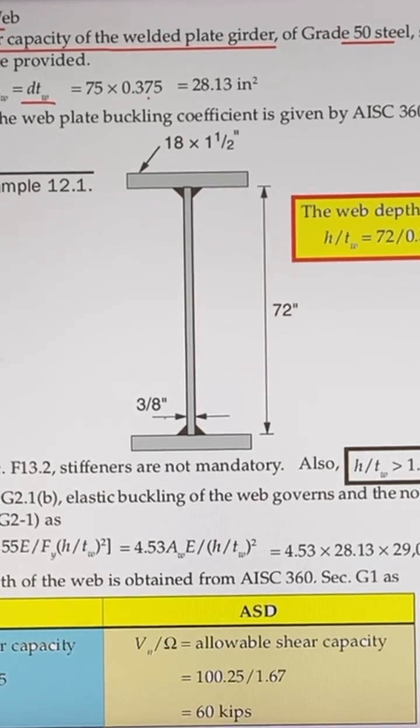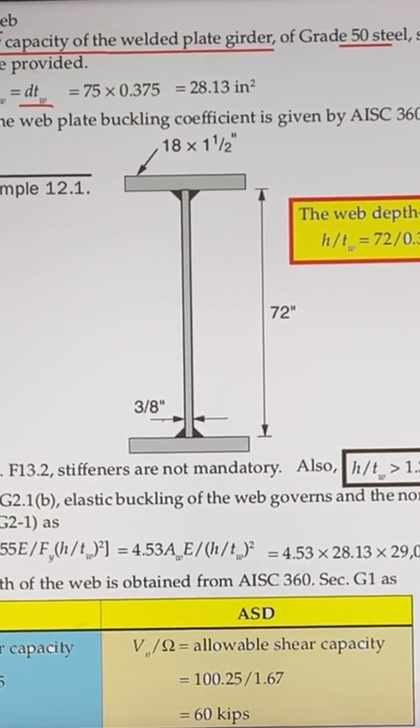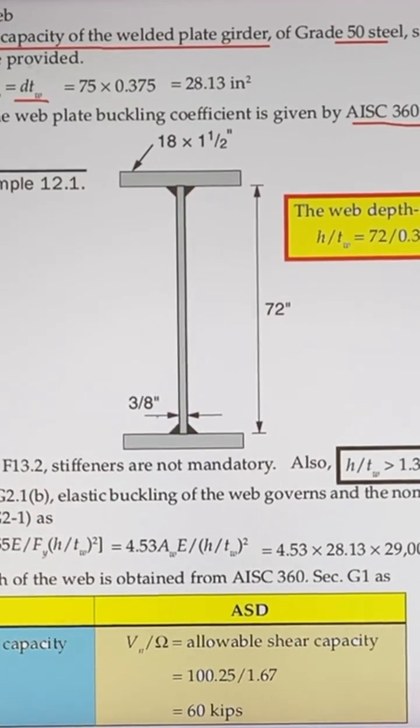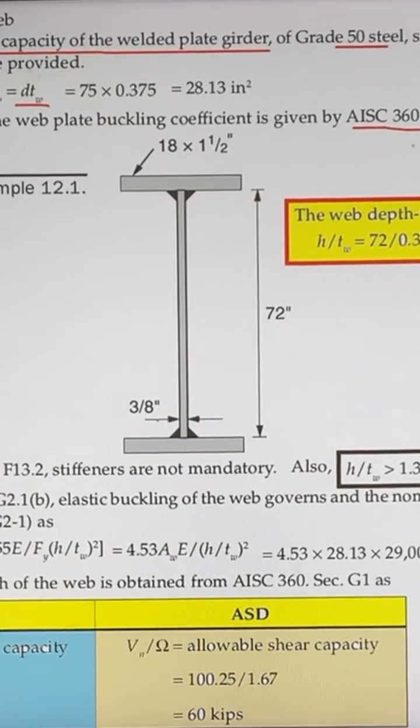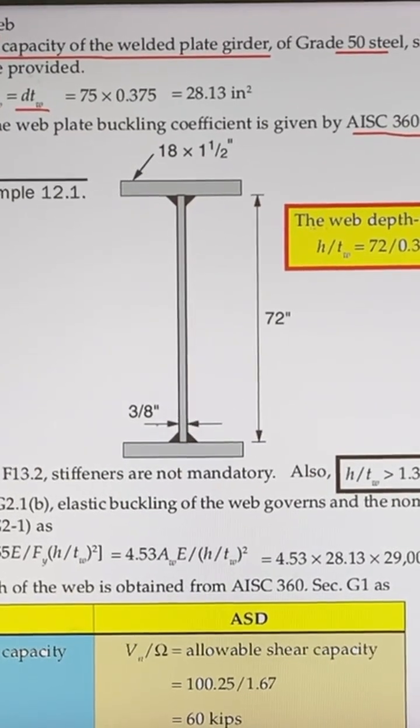As defined in Section G2.1, the web is unstiffened and the web plate buckling coefficient is given by AISC as kv equals 5 for unstiffened web buckling. The web depth-to-thickness ratio h/tw is 72 divided by 0.375, which equals 192, and this is less than 260.